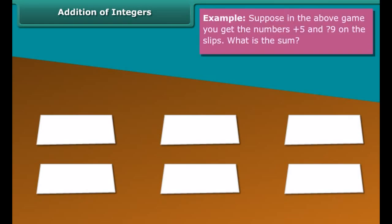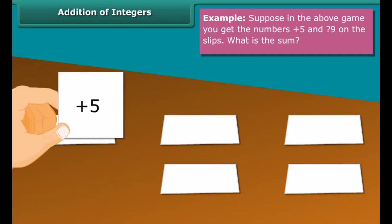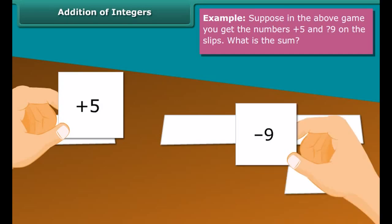Suppose in the above game you get the numbers plus 5 and minus 9 on the slips. What is the sum? Plus 5 plus minus 9 equals minus 4.